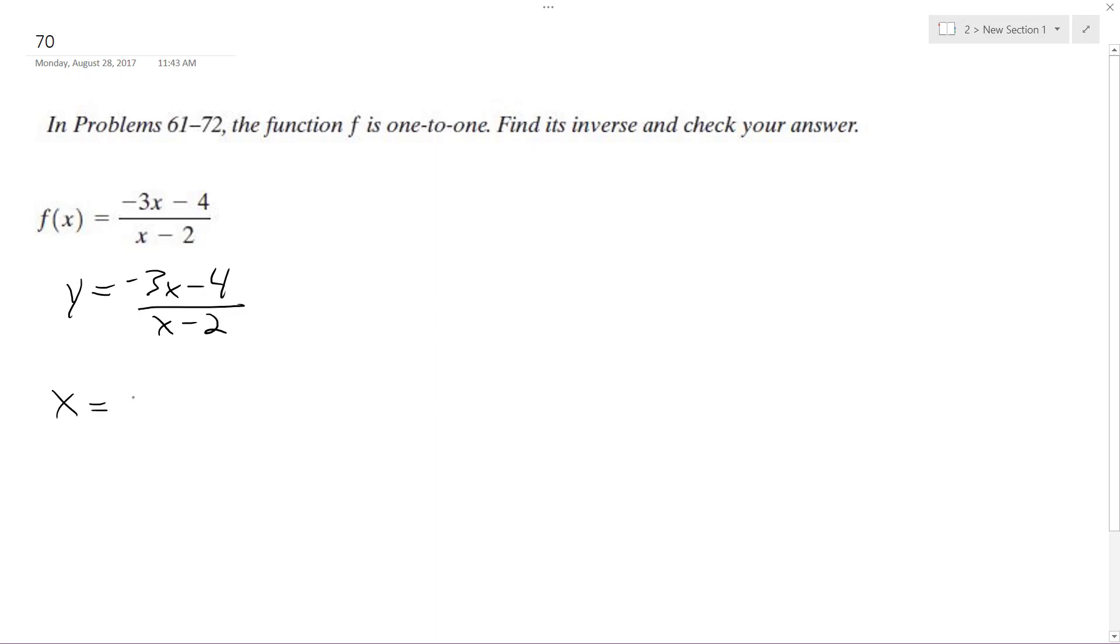So swap the variables. We have x equals negative 3y minus 4 over y minus 2. I multiplied this, so xy minus 2x equals negative 3y minus 4.